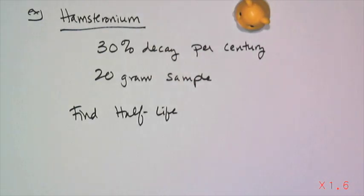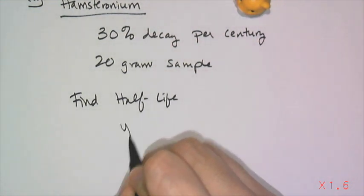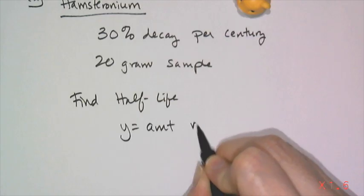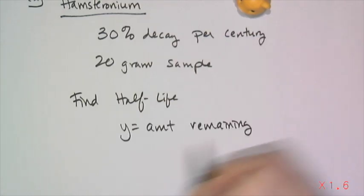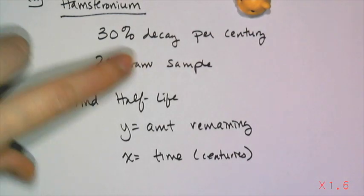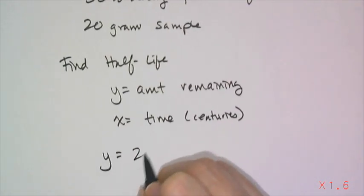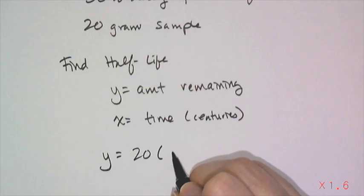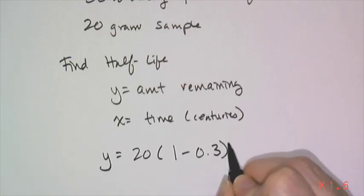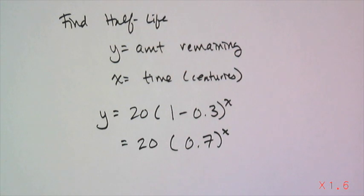If I want to find the half-life of hamsteronium to tell everyone this is the half-life, this is how dangerous this is going to be, I need to write a model first. Let's say that y is equal to the amount remaining of hamsteronium, and x is equal to the time in centuries, because I gave you the decay rate in centuries. So my model is going to be y equals the original amount, which is the 20 grams, multiplied by the 1 minus the 30% written as a decimal, raised to the x power. If I want to simplify that model, I get 20 times 0.7 raised to the x.